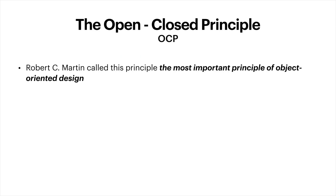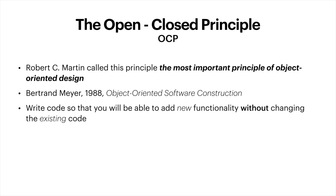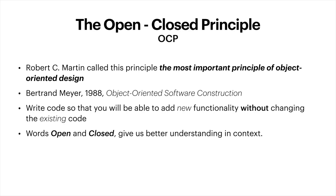Robert Martin has called this principle the most important principle of object-oriented design. But he wasn't the first one who defined it — it was Bertrand Meyer who wrote about it in 1988 in his book, Object-Oriented Software Construction. The general idea is that you should write your code so that you will be able to add new functionality without changing the existing code. That prevents situations where a change to one of your classes also requires you to adapt all depending classes. So let's see the words open and closed in context.